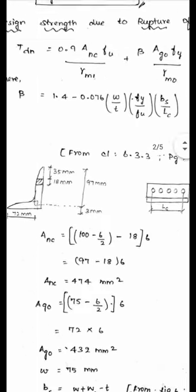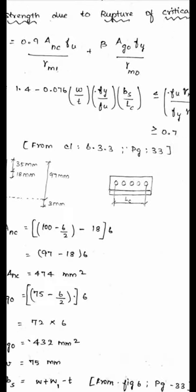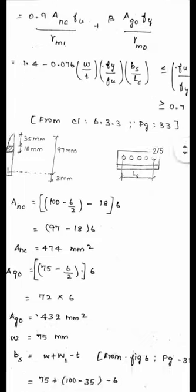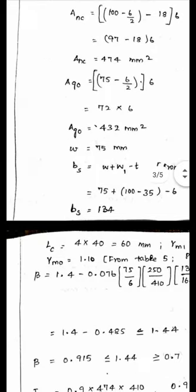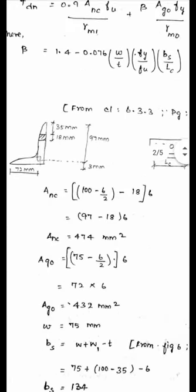Now Bs is known as 134 mm. Lc is the length of the connection, measured from the center of the first fastener to the last fastener. With 5 bolts there are 4 gaps, so Lc = 4 × 40 = 160 mm.